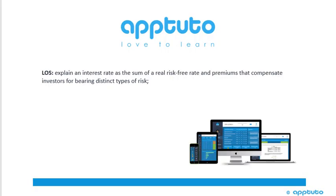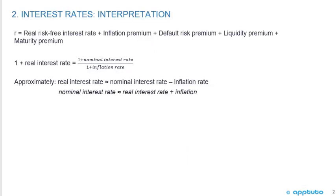The LOS explains an interest rate as the sum of a real risk-free rate and premiums that compensate investors for bearing distinct types of risk. An interest rate can be looked at as the real risk-free interest rate plus an inflation premium. If I'm going to tie up my money for some period of time and get it back in the future, there may be inflation, so I may need to add an inflation premium. Plus a default risk premium — if there's some chance that in the future I don't get my money back, that's a default risk premium.